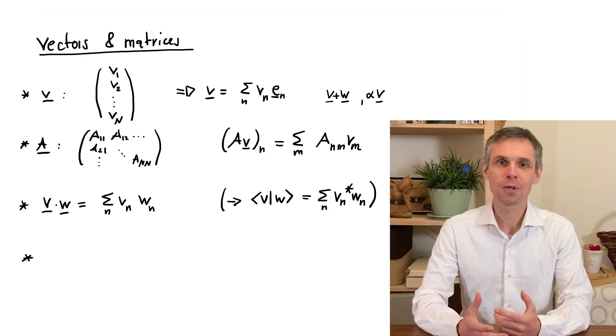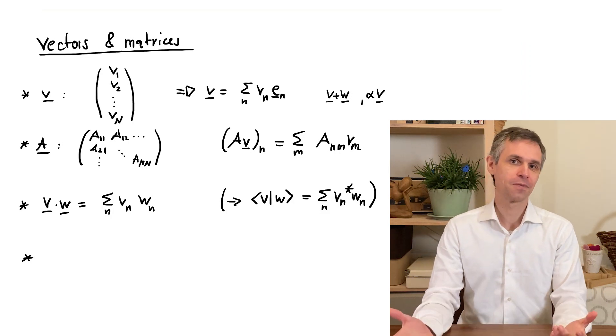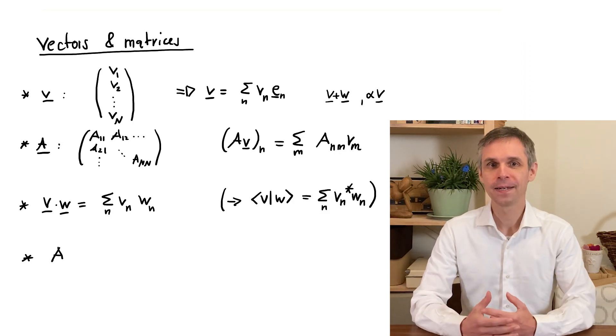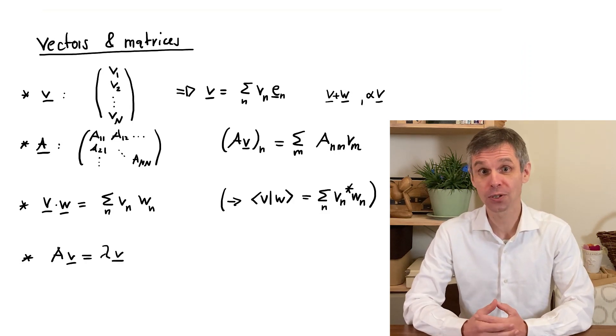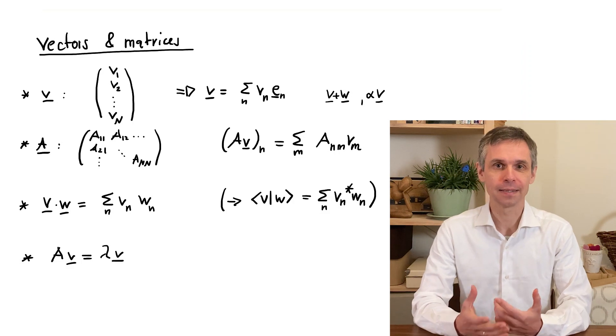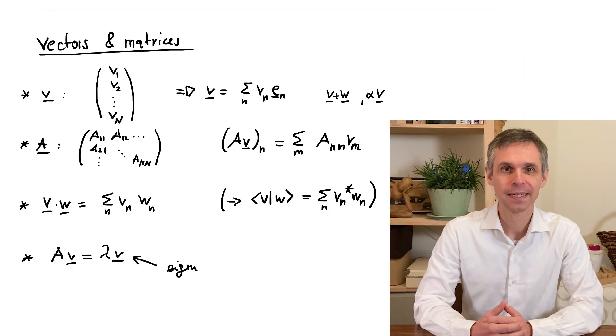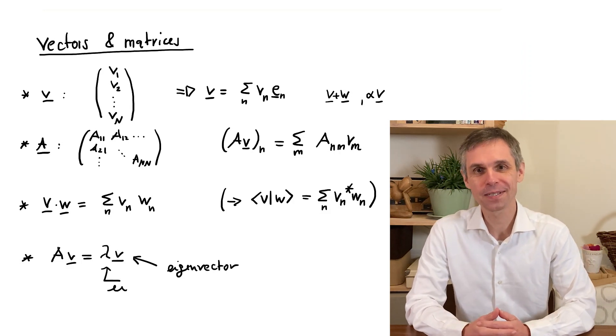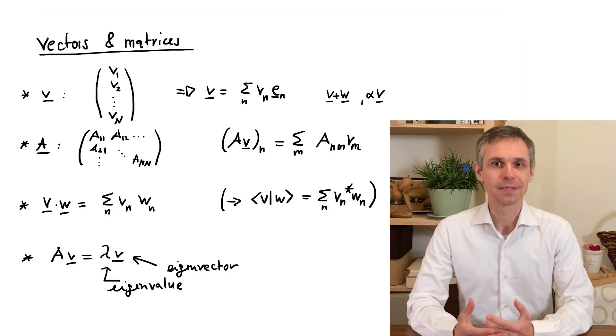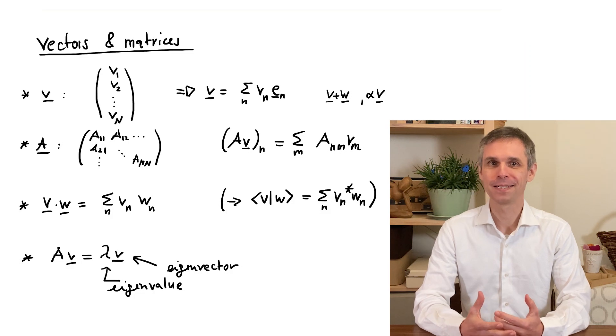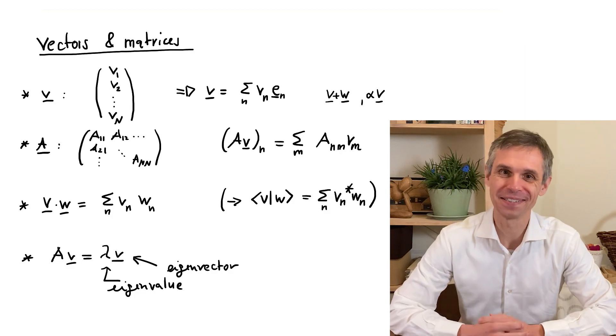We will also make use of one more way to tie vectors and matrices together. This relates to the fact that for any given matrix A, there are very special vectors that when multiplied by the matrix do not change their direction, but are simply scaled in length by a certain scale factor that I here denote as lambda. These vectors are known as the eigenvectors of the matrix and the scale factors are known as the eigenvalues. In quantum mechanics, these mathematical objects acquire a surprisingly concrete physical meaning that is indeed a central element of this theory.